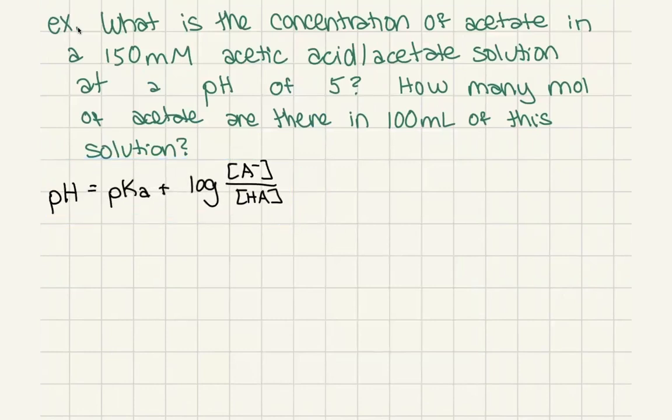Okay. So in this question, we're asked, what is the concentration of acetate in a 150 millimolar acetic acid/acetate solution at a pH of 5, and how many moles of acetate are there in 100 milliliters of this solution? So two parts, we'll take them one by one, but don't worry, if you know one, you can find the other pretty easily.